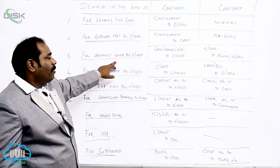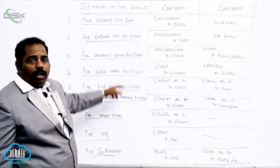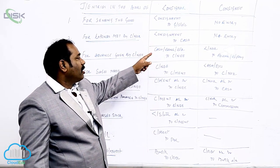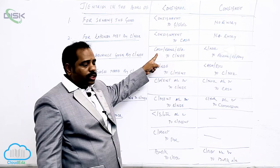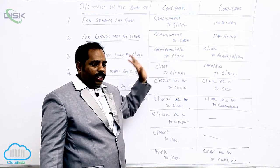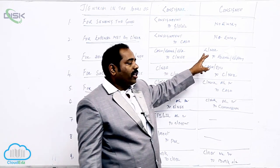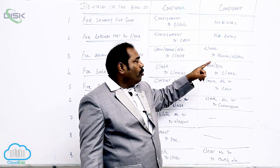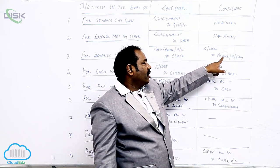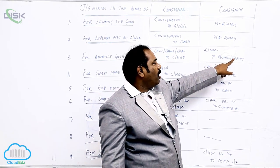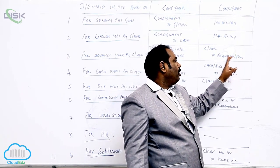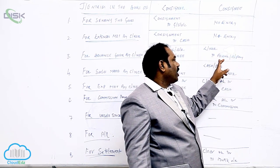Third: advance given by the consignee. Now the consignee is giving you the advance. When you get the advance, in the books of consigner, we are receiving cash, check, or bills receivable. The consignee is the giver. For the consignee, the consigner is the receiver. He is giving the advance in the form of check, or he is accepting a bill. If he accepts a bill, you write bills payable. If he gives a check, you write bank.